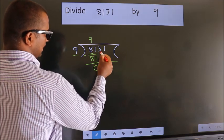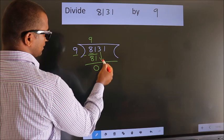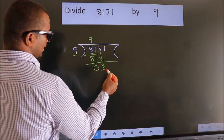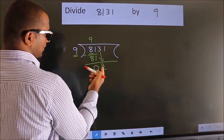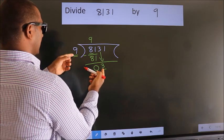After this, bring down the beside number. So, 3 down. Here we have 3, here 9. 3 is smaller than 9.